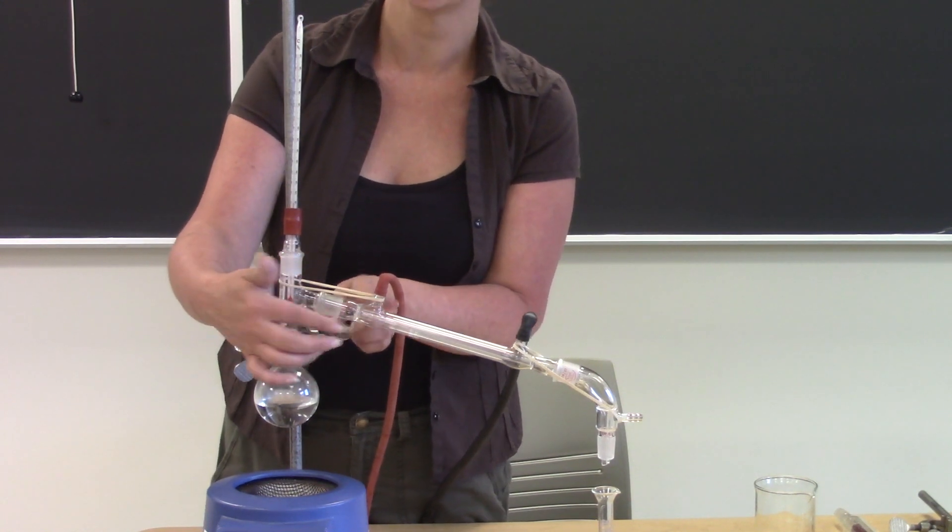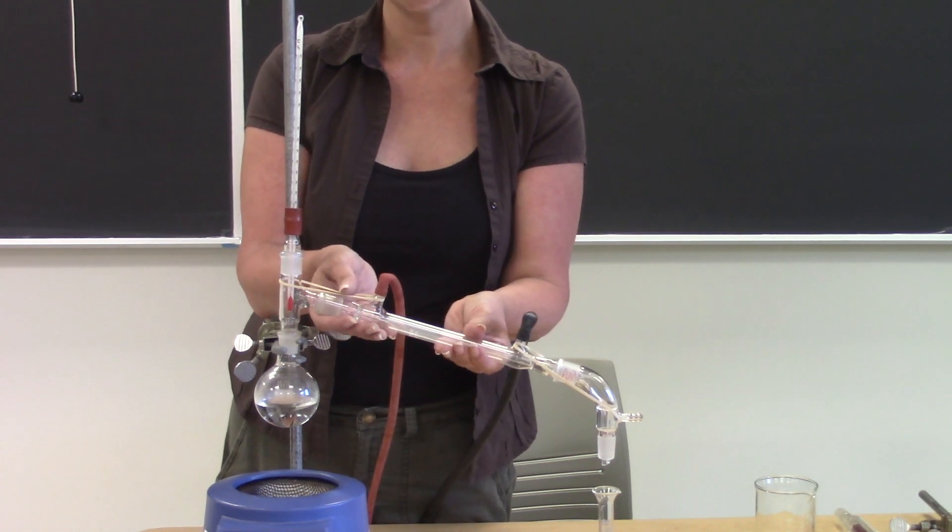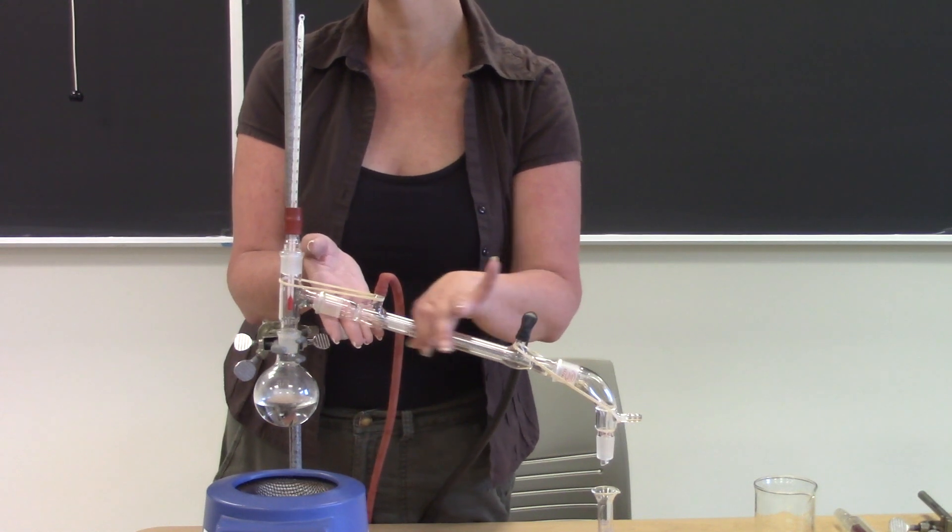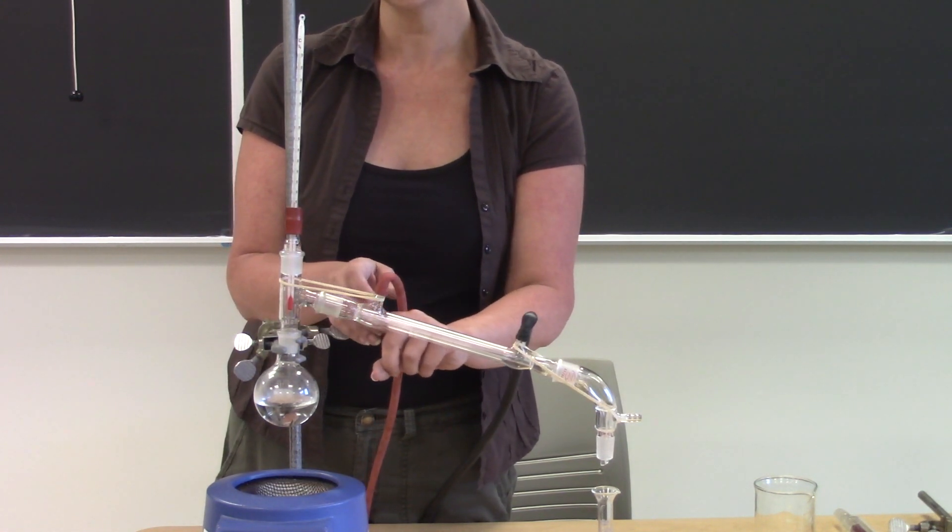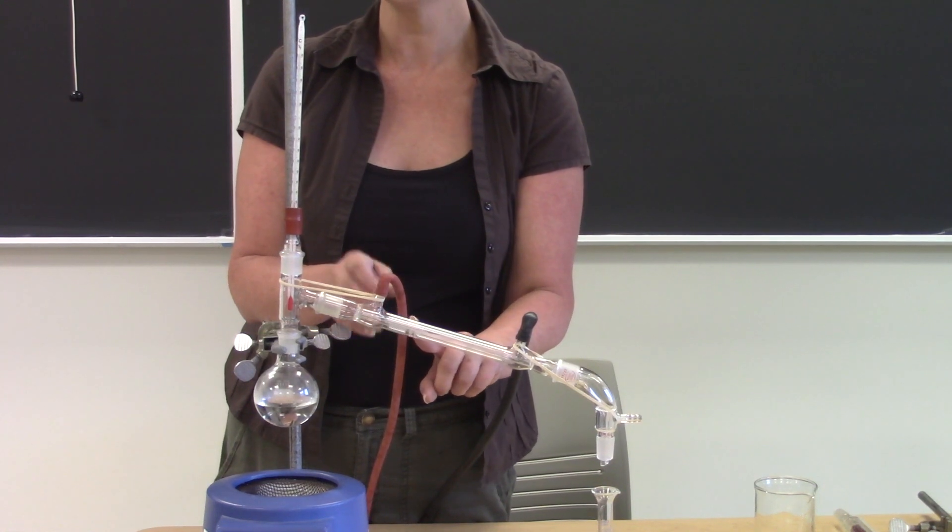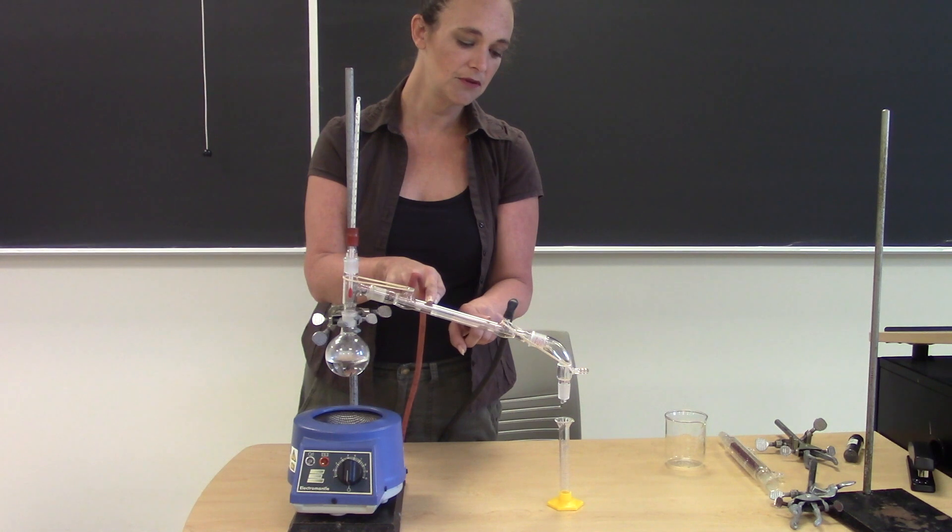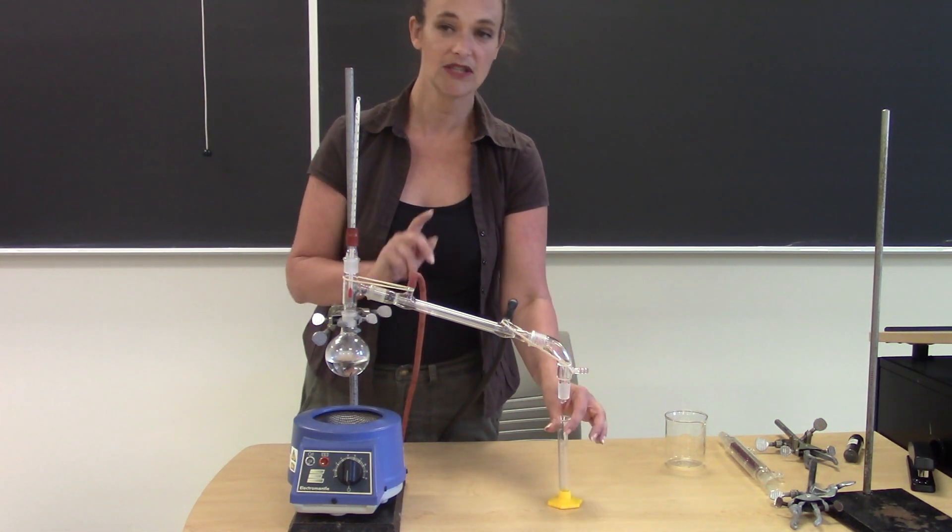This is your condenser. This is where we want those vapors to go because this condenser is going to be cooled by flowing some cold water through from the sink. And so the vapors go through the inner tube, they're cooled, turned back into a liquid, and then they come over to the end of the condenser and they drip down into your collection container.